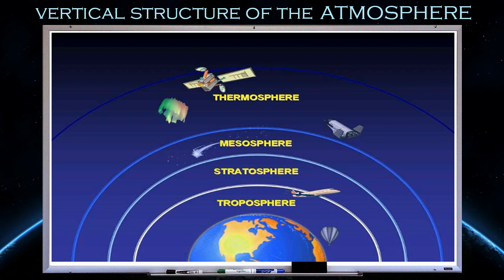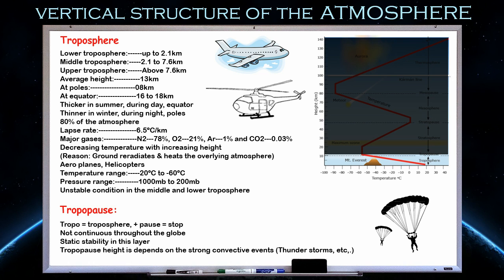The first layer is the troposphere. I will cover some details that beginners may not know. The troposphere can be divided into three layers: the lower troposphere, which extends up to 2.1 km; the middle troposphere, from 2.1 to 7.6 km; and the upper troposphere, above 7.6 km up to the rest of the troposphere. The average height of the troposphere is 13 kilometers.